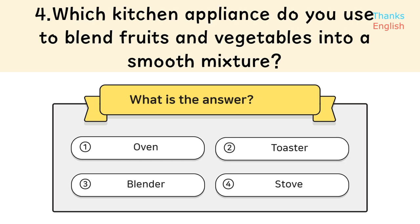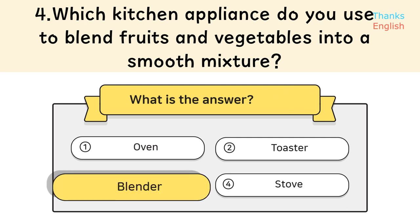Question 4: Which kitchen appliance do you use to blend fruits and vegetables into a smooth mixture? Answer 3: Blender.